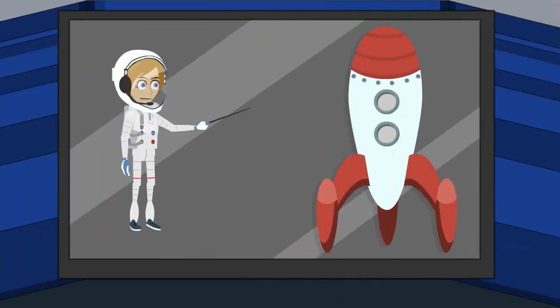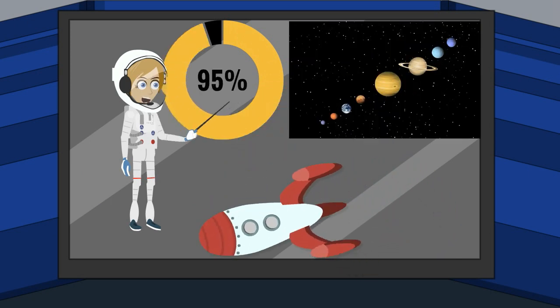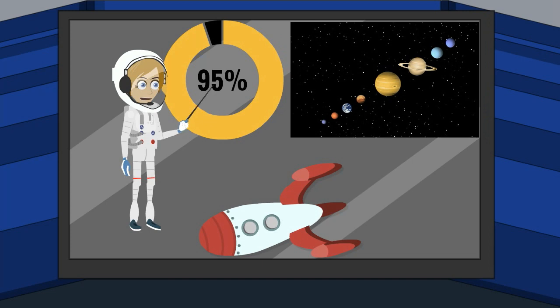Rockets need to carry all the fuel they need with them from the start of their journey. This means that currently the weight of spacecraft are 95% fuel at launch. With all this weight added on, it's not efficient or practical to use spacecraft that rely on thrusters and fuel tanks to go distances much further than the moon. So how can we make space travel more efficient? And how can we go further and faster in space?